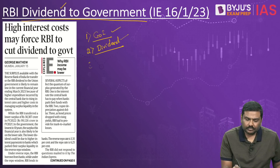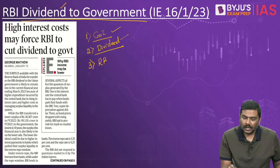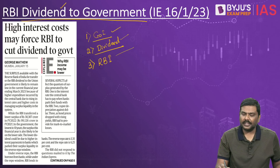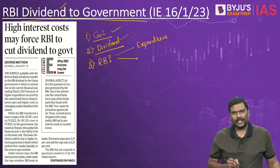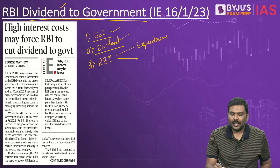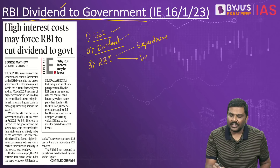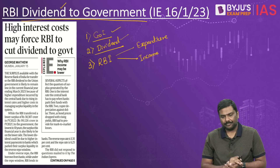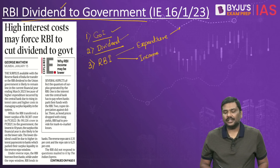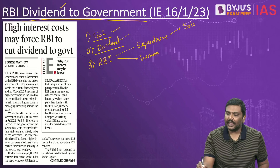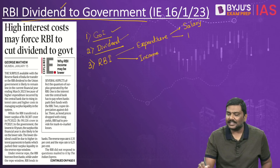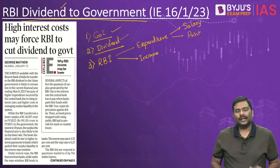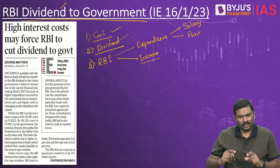Third point: Reserve Bank of India every year incurs expenditure and also earns revenue. On one side it incurs expenditure — for example, paying salaries of employees, printing currency notes — and on the other hand it earns income in a large number of ways.